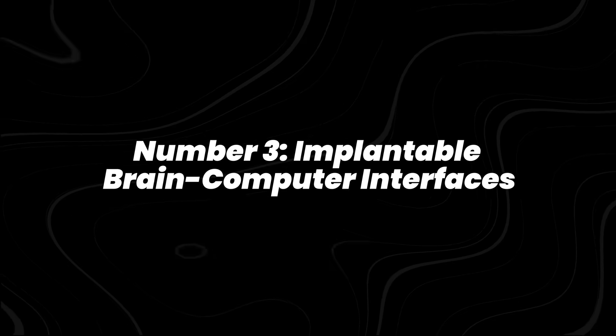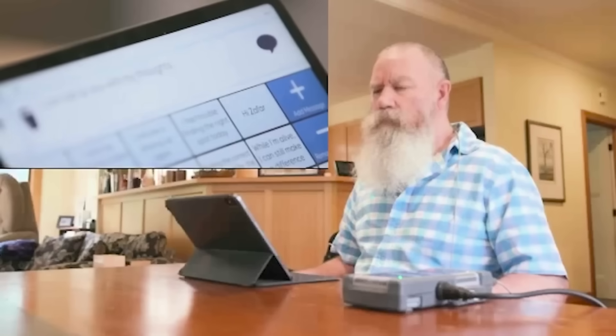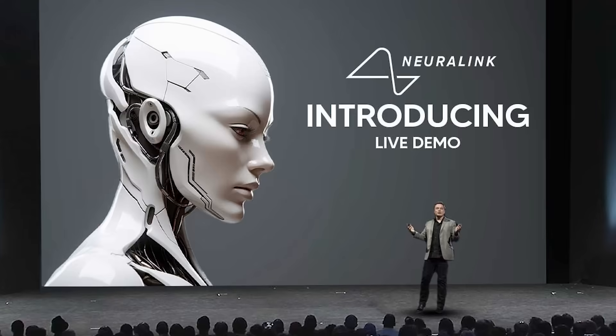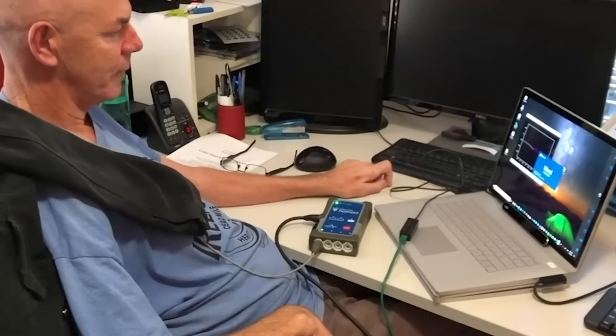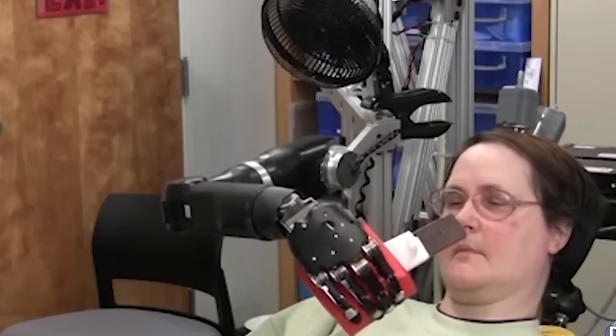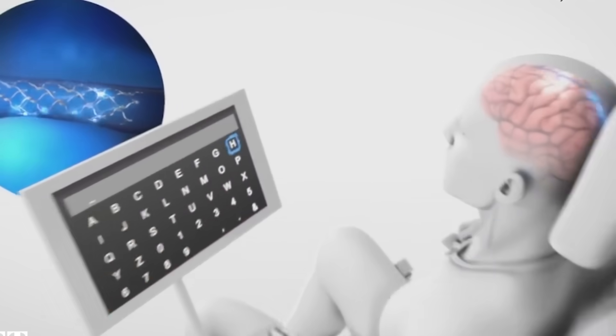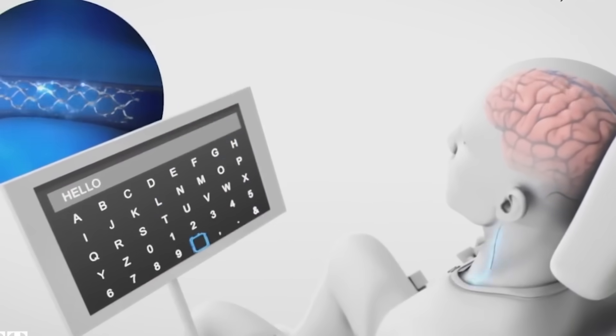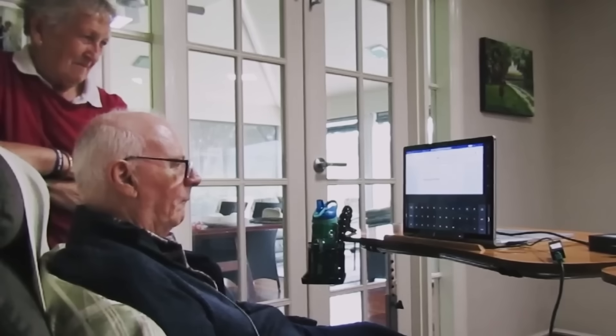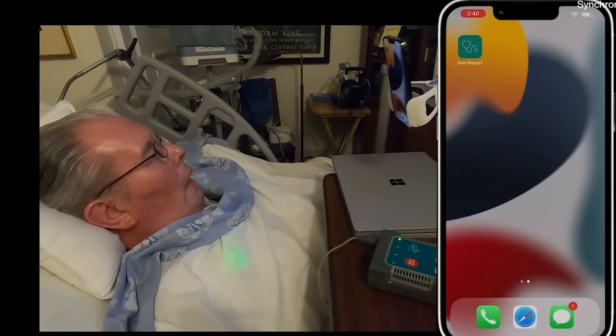Number 3, implantable brain-computer interfaces. Brain-computer interfaces, BCIs, link the brain directly to computers for two-way communication. Neuralink, Synchron, and other companies are testing implants that allow paralyzed patients to control devices by thought. Implants record neural activity and can stimulate brain regions to restore function. Potential applications include memory augmentation and direct brain-to-brain communication. In 2025, human trials expanded to more patients, demonstrating reliable cursor control and text generation purely via thought.